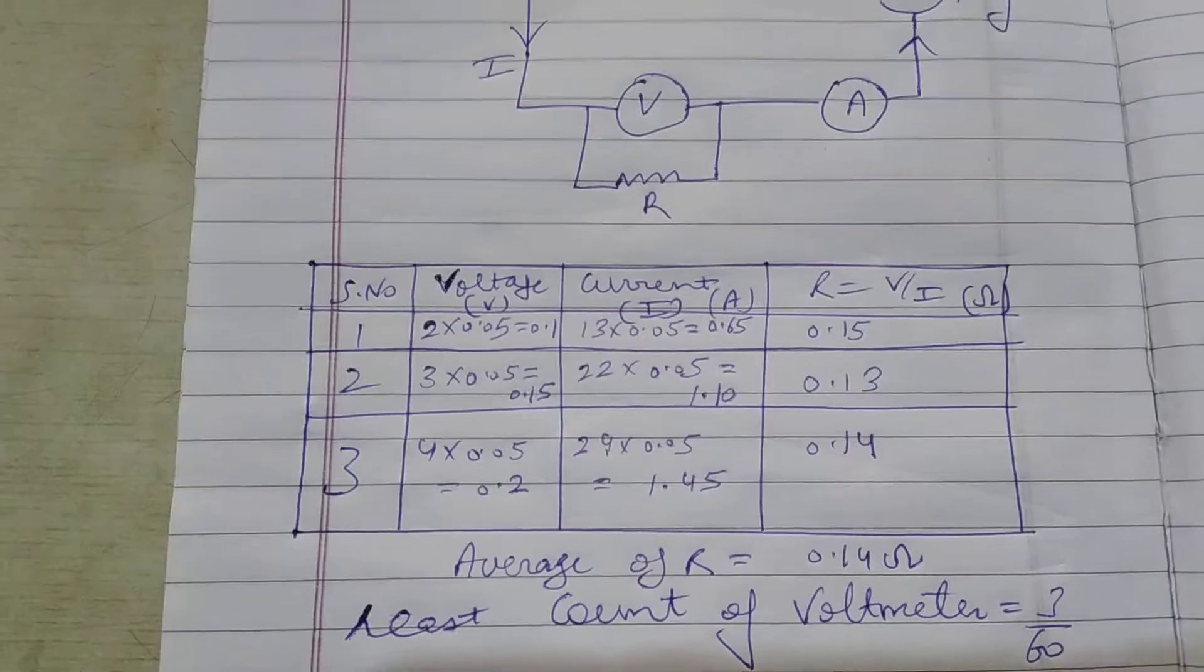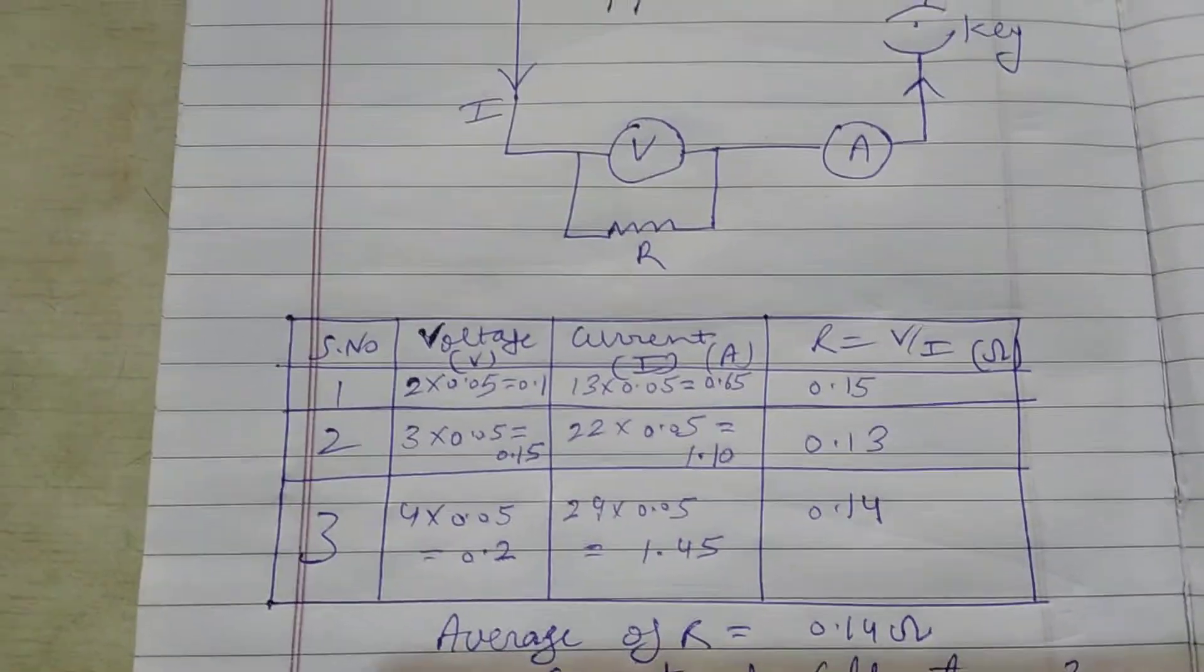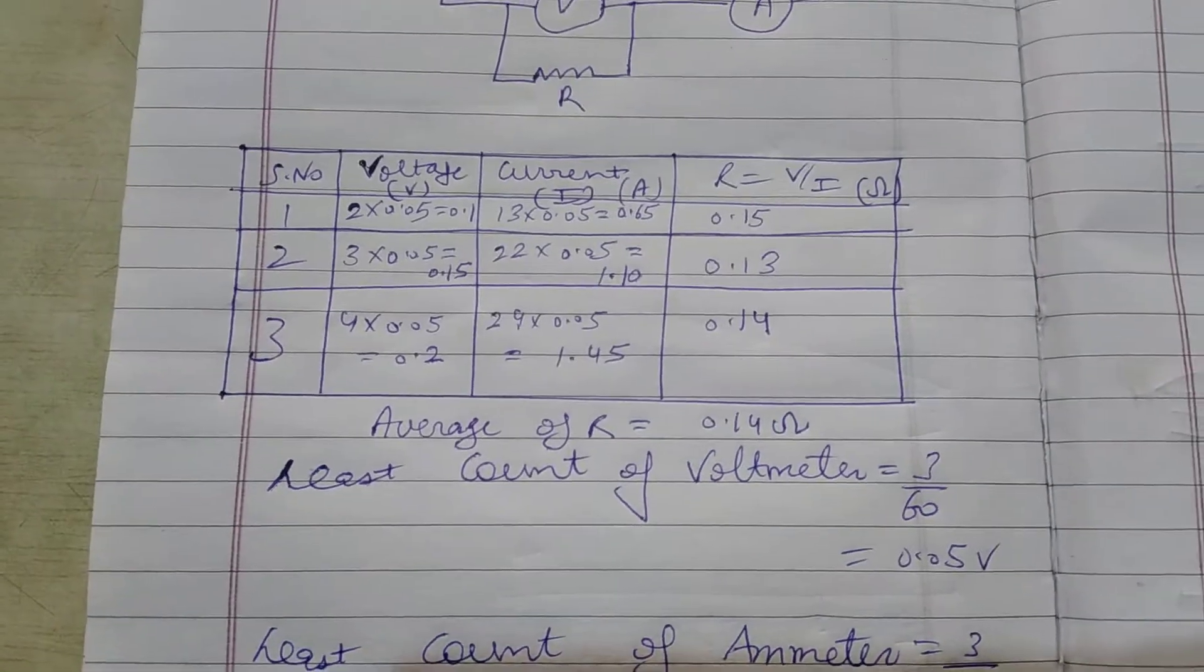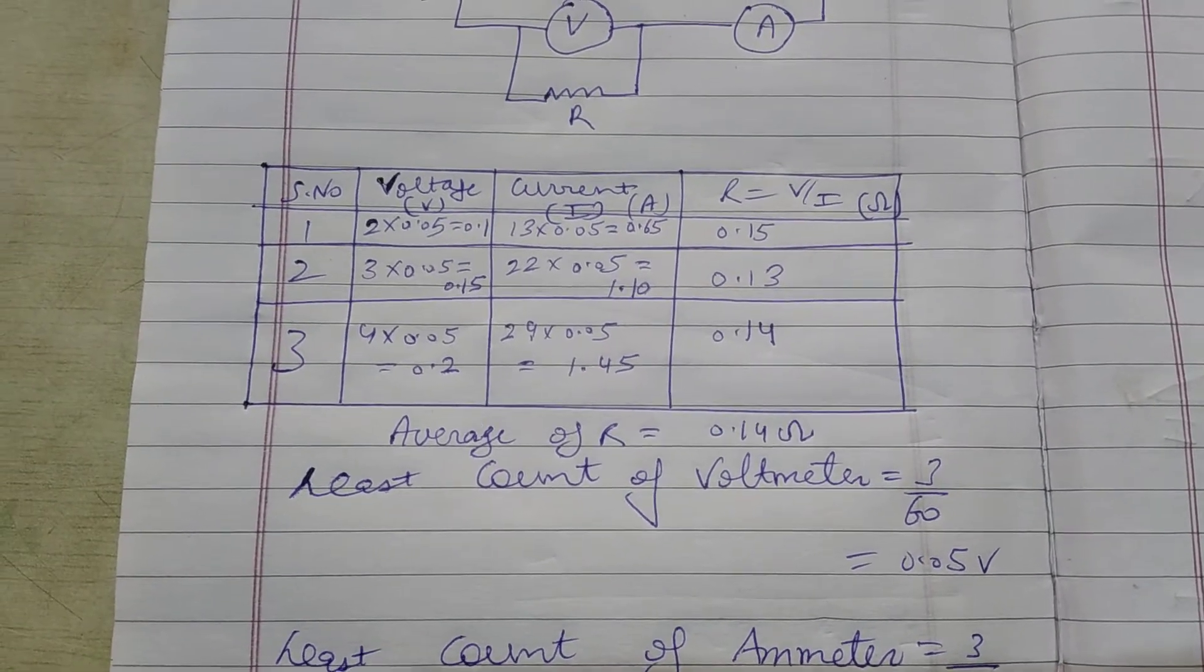So here we have found three readings already. You can see the least count of the voltmeter which is 0.05. How can we find that?